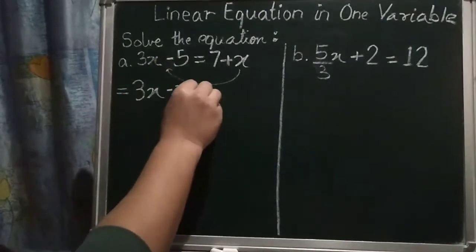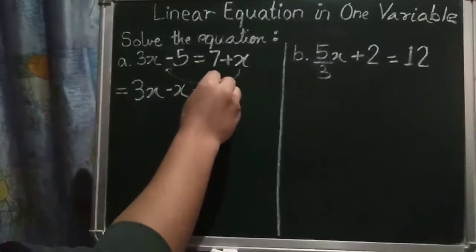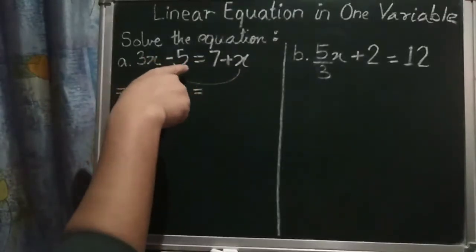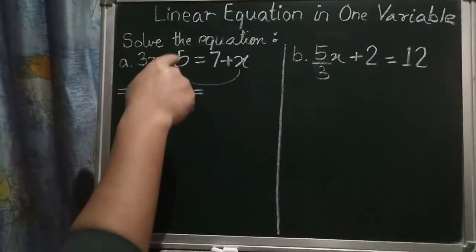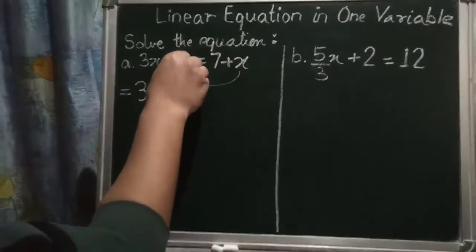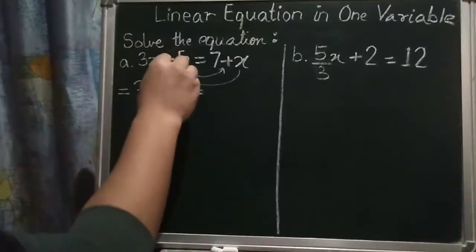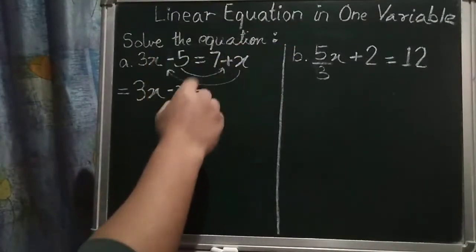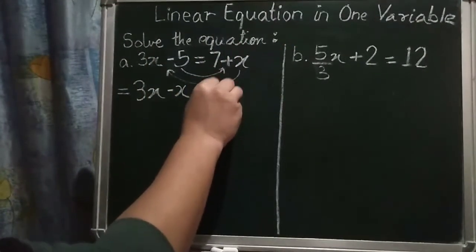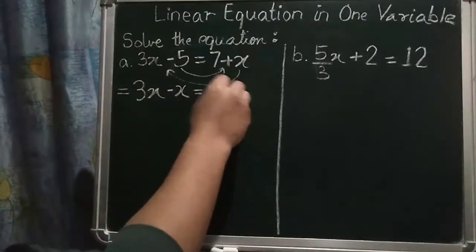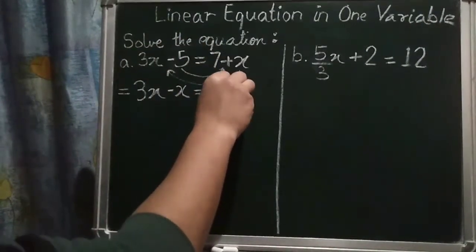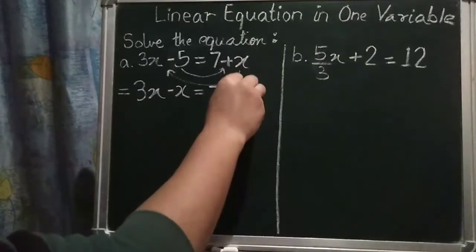And now, same, we already have 7. What will happen with minus 5? Minus 5, again, it will go to this side. Minus 5 will go to this side. So what happens? 7. Minus 5 it is here. So instead of minus, it will become plus. And it will become 5.